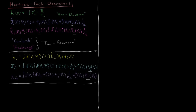We have a Coulomb operator J_i acting on orbital psi_j, which gives us psi_j times the integral over electron two. That's the integral of electron two's electron density, psi*_i times psi_i, times the Coulomb operator one over r_12. This gives us how much electron one is repelled by the mean field of electron two. So our treatment of this 1/r_12 operator is a mean field approximation — it describes how the electrons feel each other on average.